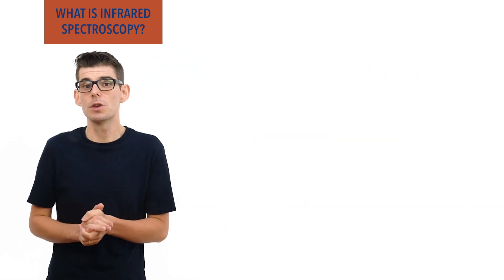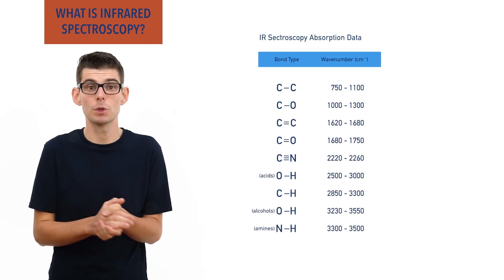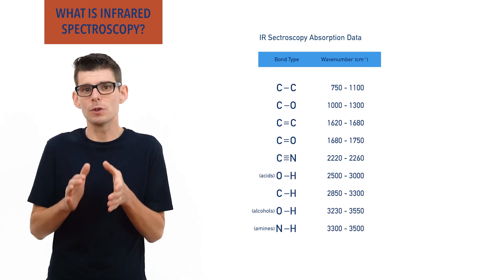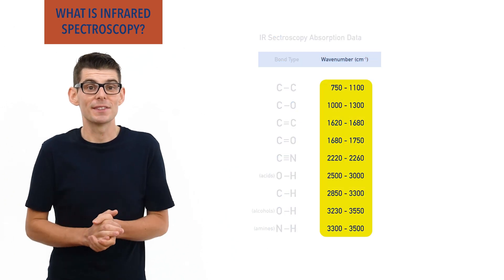Tables are produced that show the range of possible wavenumbers a particular bond type is likely to absorb. The same bond type in different molecules will absorb slightly different wavenumbers, which is why a range of values is always given in such tables.